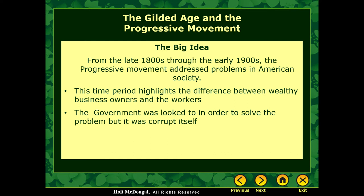This Progressive Movement really set out to address some of those major issues we've talked about in the past. During this time you see a major difference between the wealthy business owners in America and the working class. There's a huge divide between those two groups, and in order to bring that divide smaller, they turned to the government.